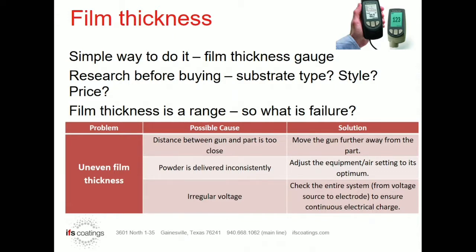With any type of gauge, you do need to calibrate them and make sure they measure a known thickness properly, or you could be lying to yourself about what your true film thickness is. We have multiple different types of substrate, so if you're doing steel or iron-type metals, you need a gauge that will read those. That gauge might or might not also read aluminum, which is an iron-free substrate, so it has to be able to measure both.